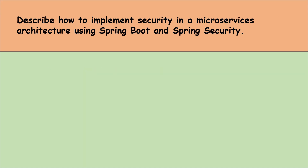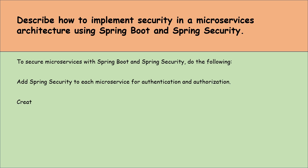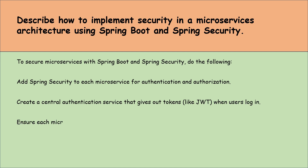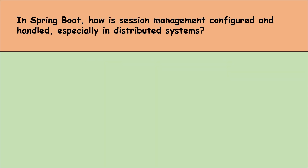Let's move to the next question: describe how to implement security in a microservices architecture using Spring Boot and Spring Security. To secure microservices, add Spring Security to each microservice for authentication and authorization. Create a central authentication service that issues tokens like JWT when users log in. Ensure each microservice validates these tokens to allow only authorized users. Use SSL/TLS for secure communication and implement an API gateway to manage security checks and route requests.